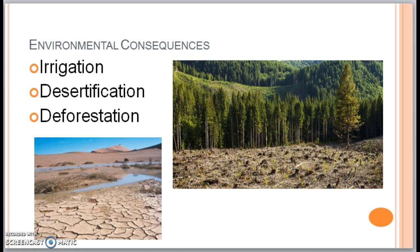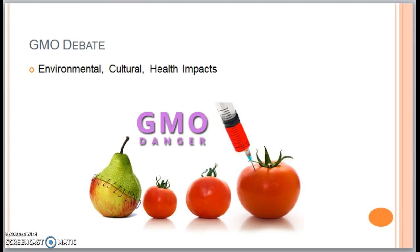We also have desertification, related to human overuse of land — the loss of habitable land and the expansion of Earth's deserts. This can result from human or natural causes. Humans have contributed to the expansion of the Sahara Desert through overly intense land use. Additionally, deforestation is the loss of forested areas caused by humans chopping down forests at rates so fast that they cannot regenerate.